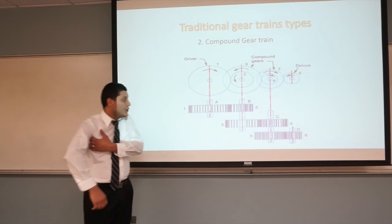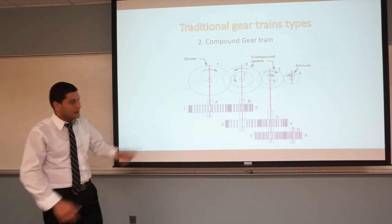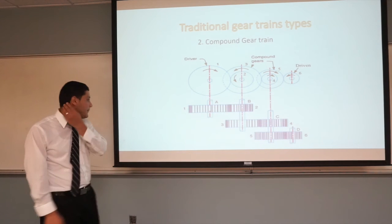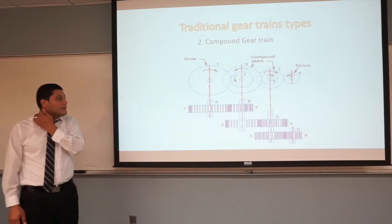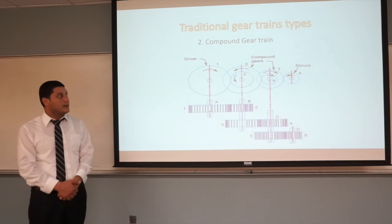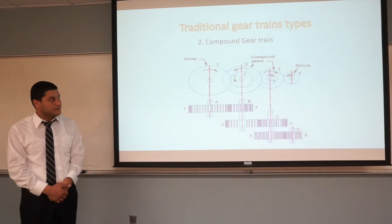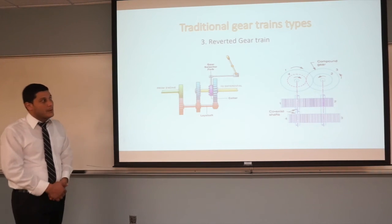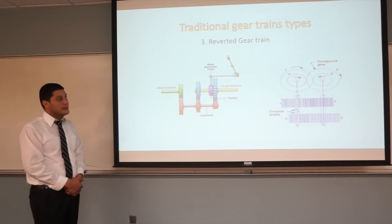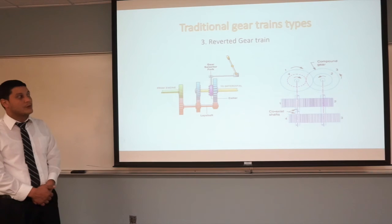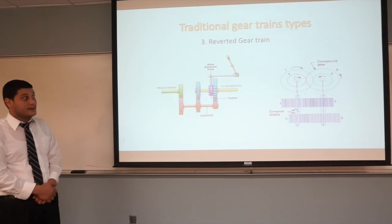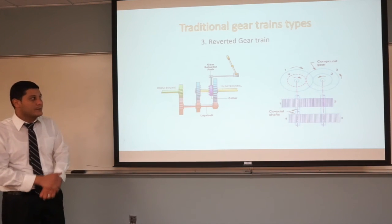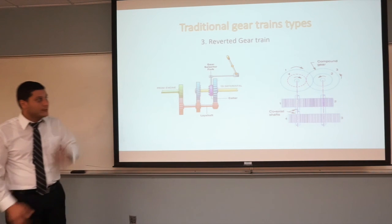The compound gear train has at least one shaft with two gears. In this type, the intermediate gears play a role in changing the velocity ratio of the entire system. Finally, there is the reverse gear train. They are used in systems where the input and the output are concentric — the best example of that is a watch, where the minutes and seconds hands share only one shaft.